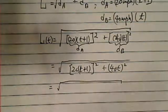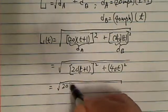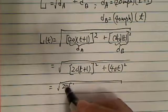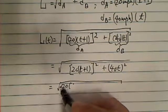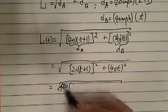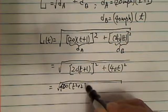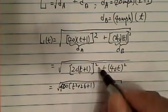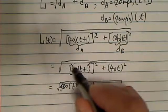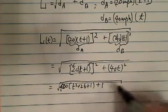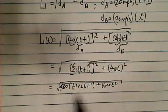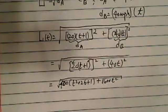A couple more steps and then we're there. So we have 20 times... 20 is actually squared, so it's 400, and then T squared plus 2T plus 1. All I did is the squared term for each one.